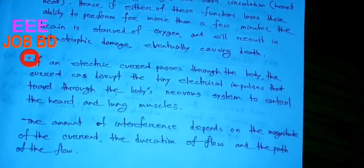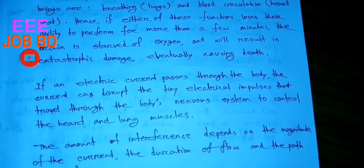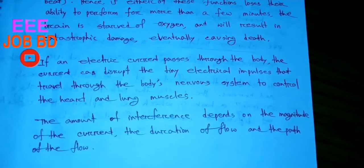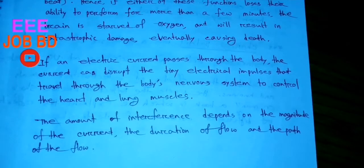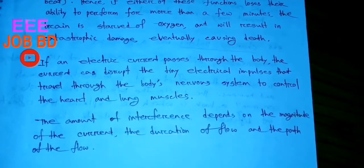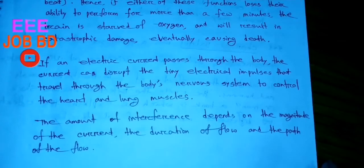The amount of interference depends on the magnitude of the current and the duration of the current. The amount of flow, the path through the heart, the life contact, or the path through the brain — these determine the effect of electric shock. The key factors are the magnitude, duration of flow, and path of the flow. When we discuss this, we refer to electric current.